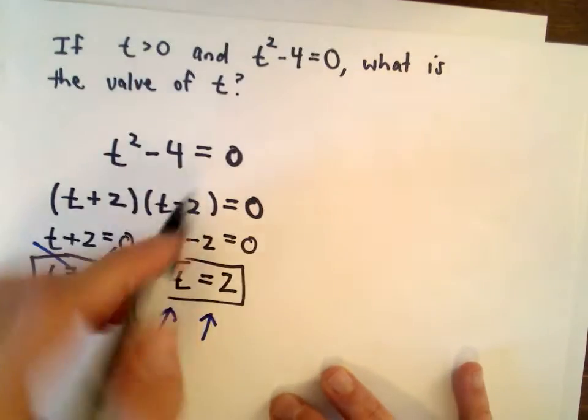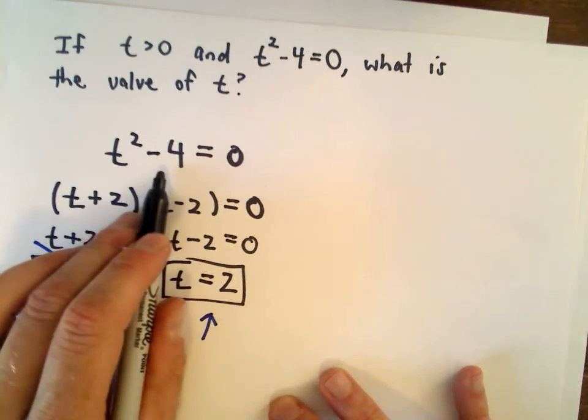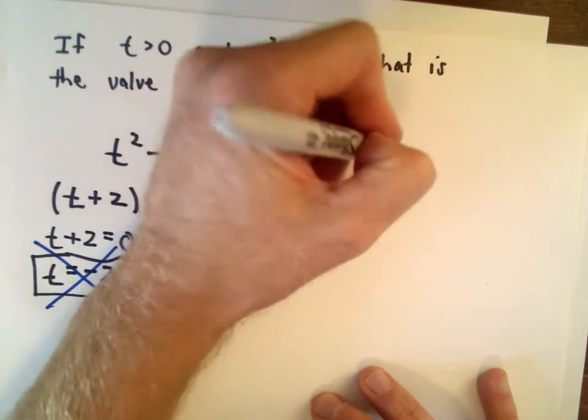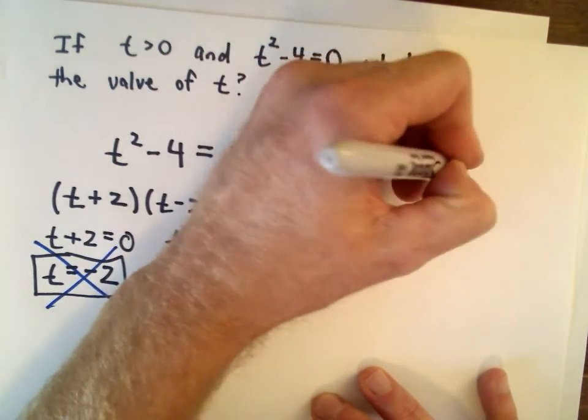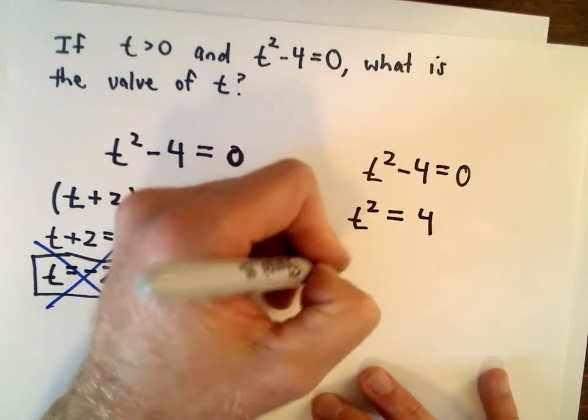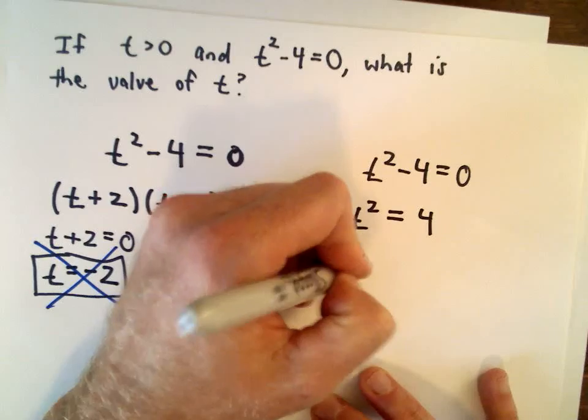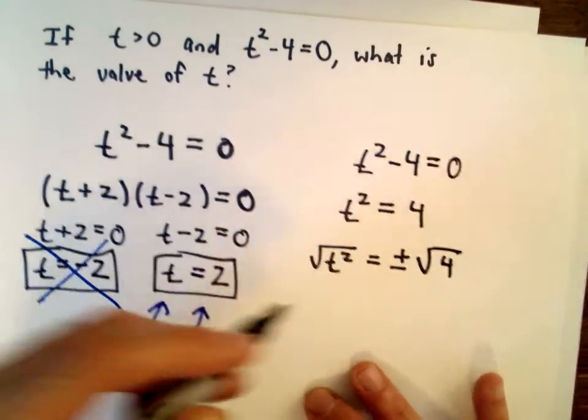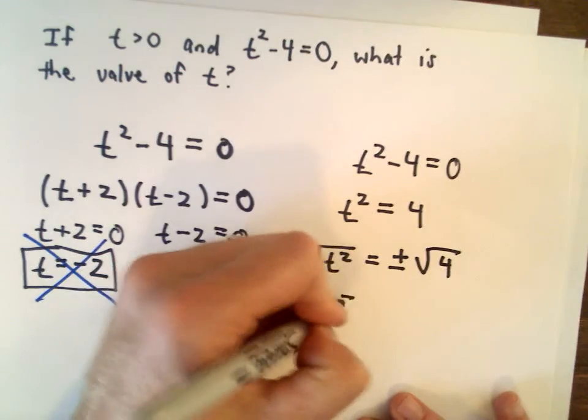The other way you could solve this equation, since there's no term involving just t, we could take t squared minus 4 equals 0, add 4 to both sides, and take the square root of both sides, remembering to include a plus and minus on one side. On the left side we're left with t.